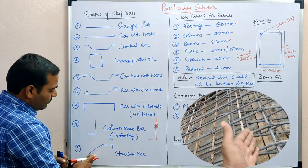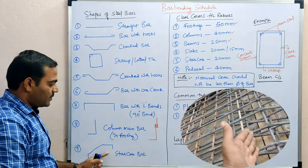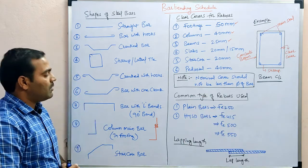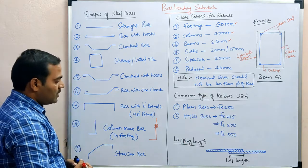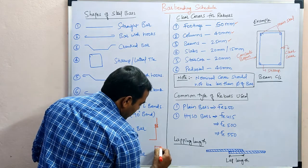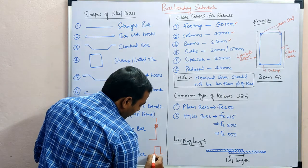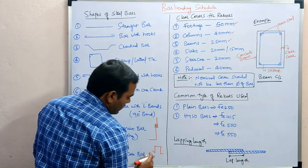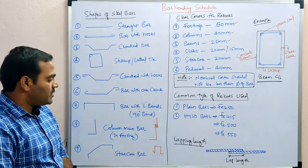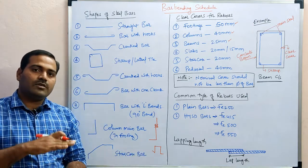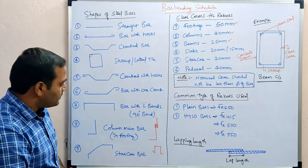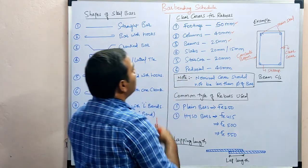The L-shaped bar is mainly used at the footing-column junction — the column bar connects in this way, and we provide this kind of bar in footings for raising the column. The next type of bar is used for staircase purposes. These are the different shapes of bars we come across in calculations.